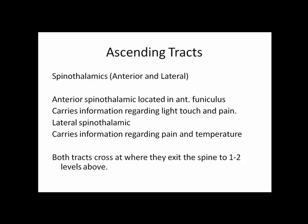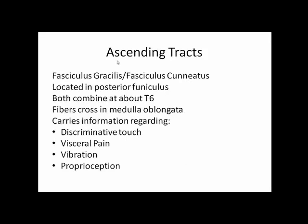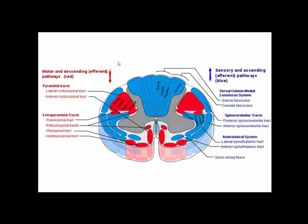Both spinal thalamic tracts cross at or one to two levels above where they exit the spine — textbooks differ on this. Here's a picture showing their locations: the lateral spinal thalamic is in the lateral funiculus, and the anterior spinal thalamic is in the anterior funiculus.